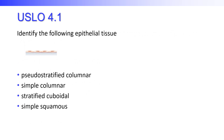Identify the following epithelial tissue. We have a single layer of cells, so its first name is going to be simple. Looking at the shape of these cells, we can see they are rather squashed. So these would be simple squamous epithelial cells.